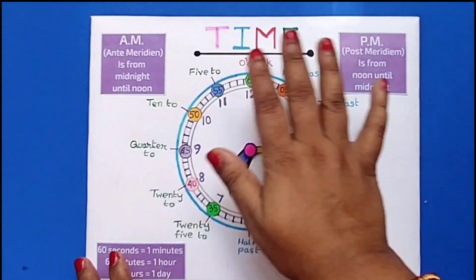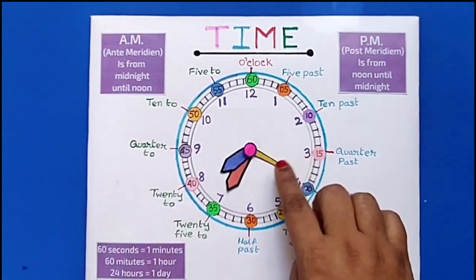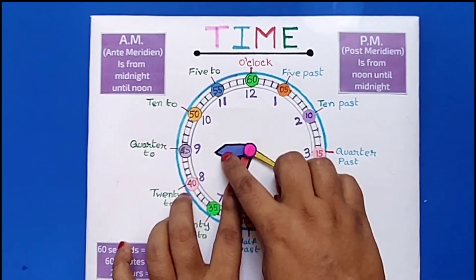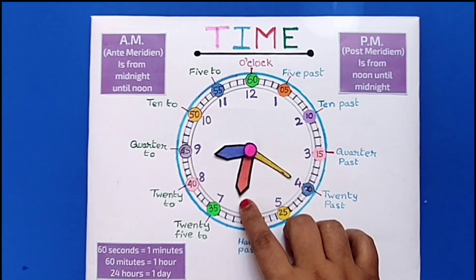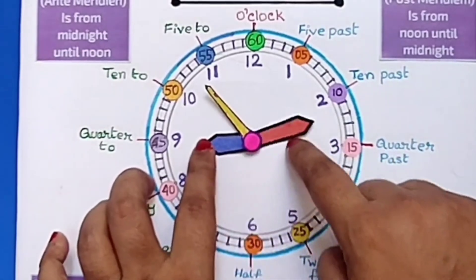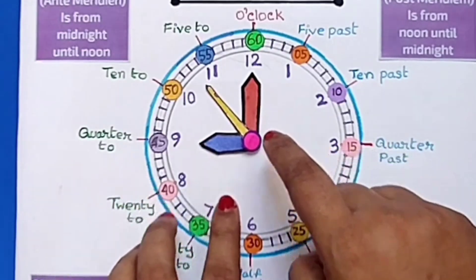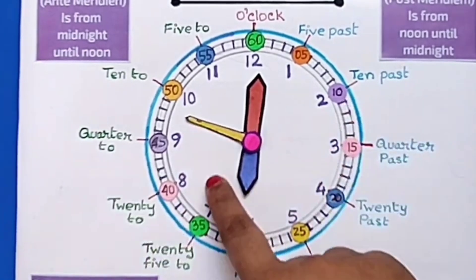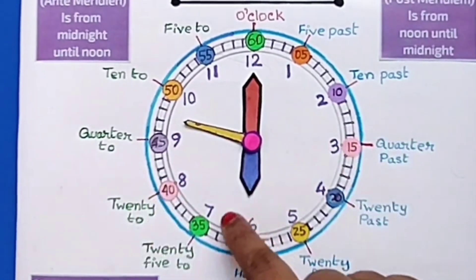In this time TLM, I have tried to cover everything about time. A clock has three hands. This is the second hand. The short hand is called the hour hand, and this long hand is called the minute hand. When the long hand is on 12 and the short hand is on 9, it is called 9 o'clock. Similarly, when the short hand is on 6 and the long hand is on 12, it is called 6 o'clock.